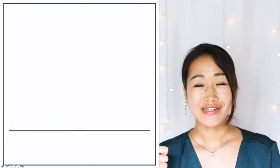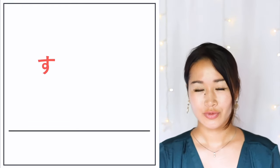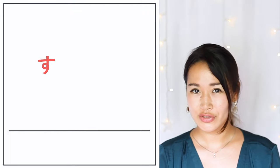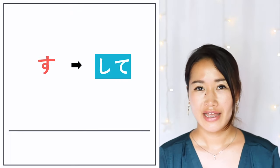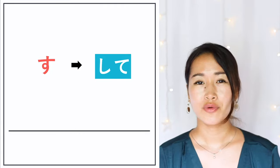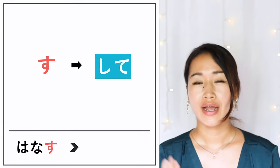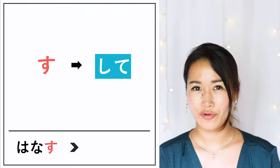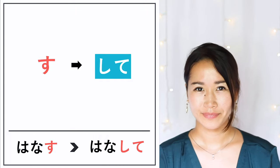Last one: verbs ending with SU change into して. For example, 'to speak or to talk' — 話す — the TEFORM is 話して.